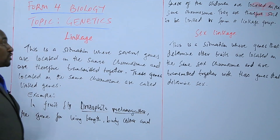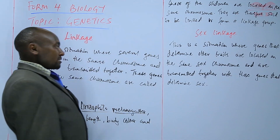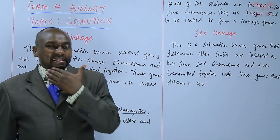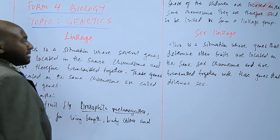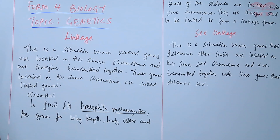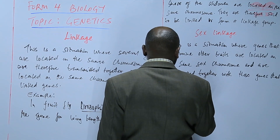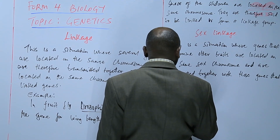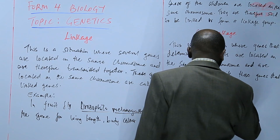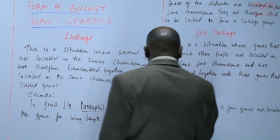So sex linkage is a situation where genes that determine other traits — other body traits, for example color blindness — are located on the same sex chromosome and are transmitted with those genes that determine sex. Now, in human beings, a few genes are located on the Y chromosome.